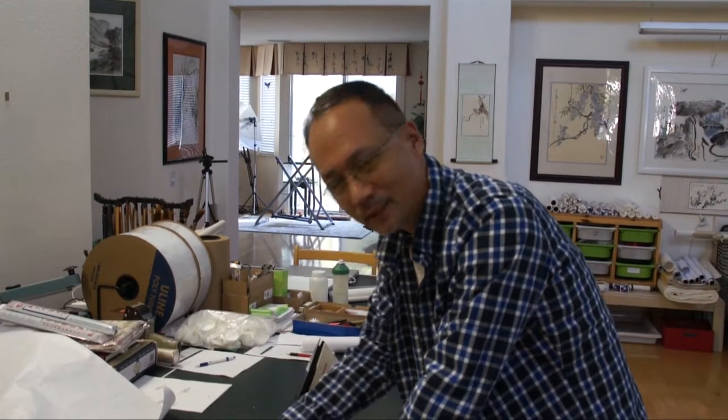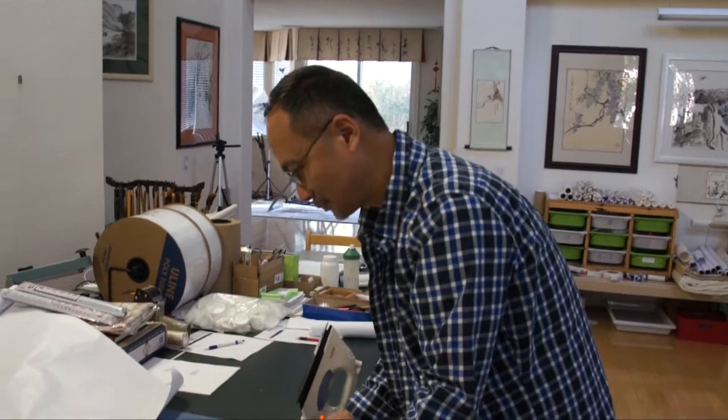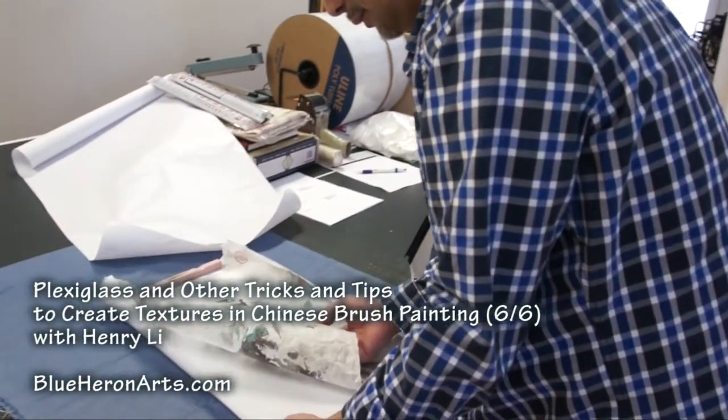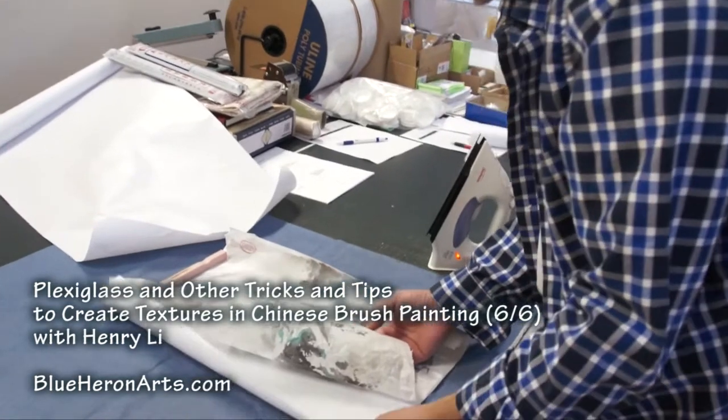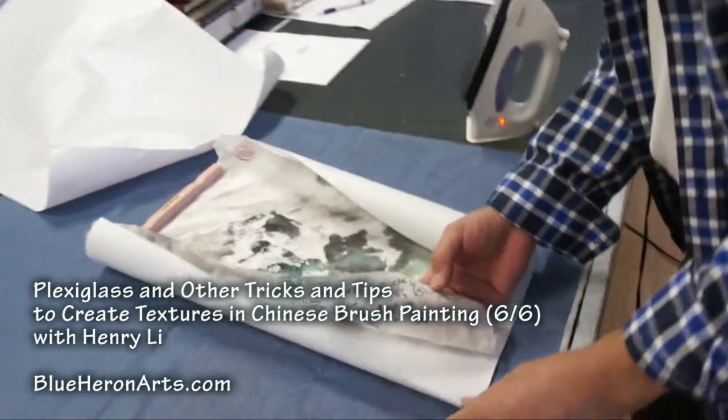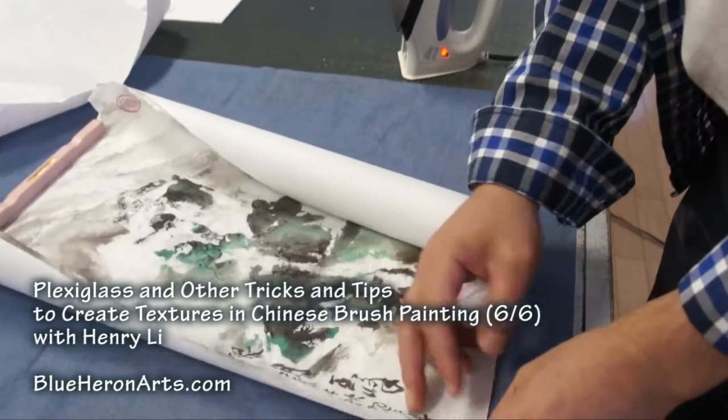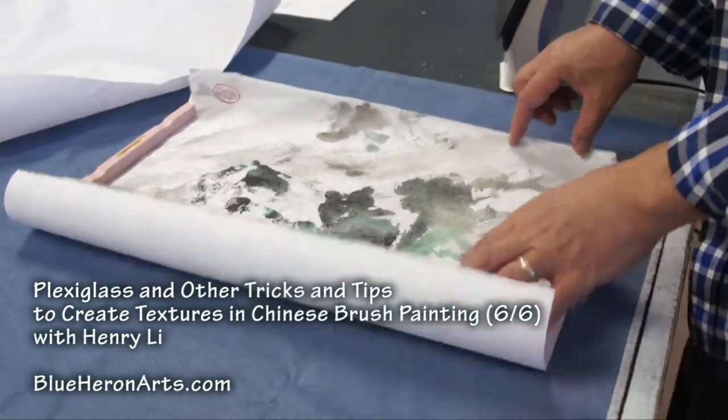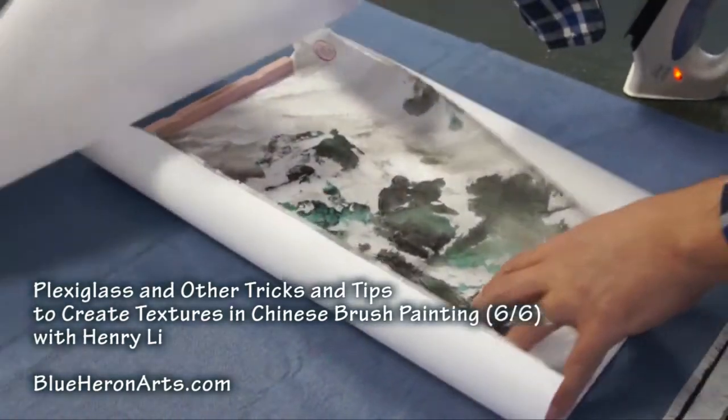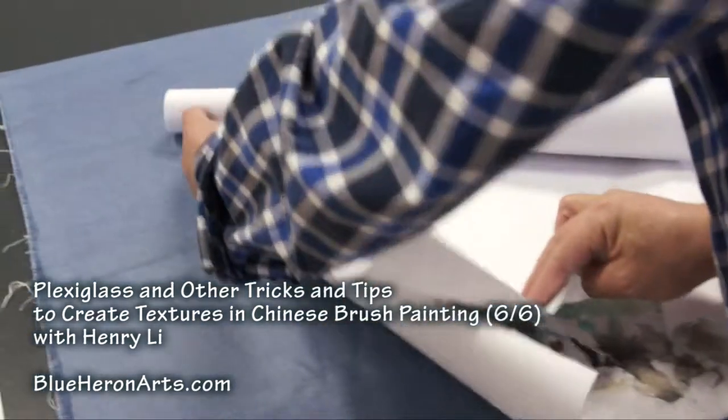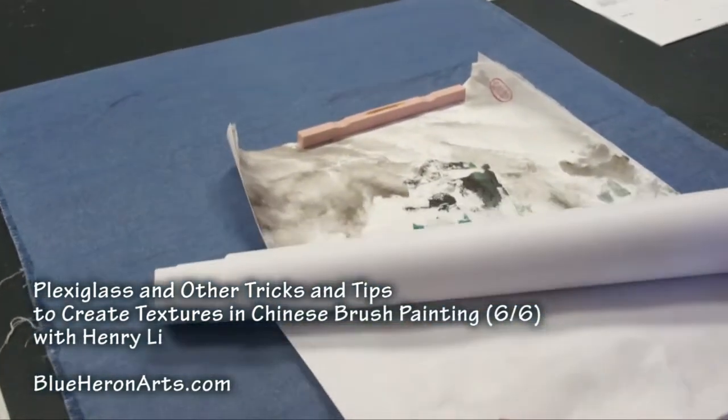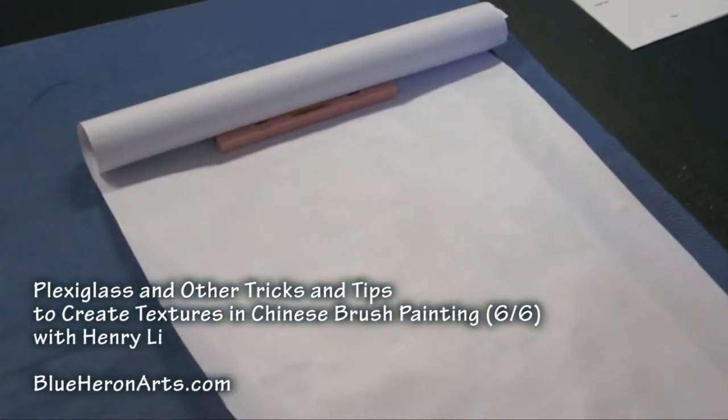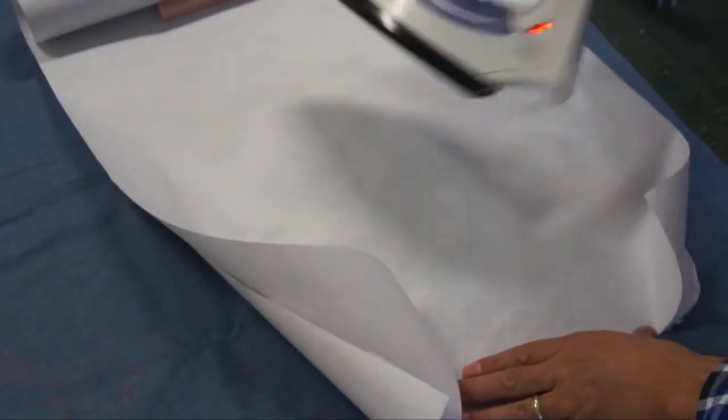Now we're going to mount this picture on silicone release paper. This is the silicone paper as a film side and release paper. So we put the painting on top of the release paper and put another sheet of the protecting paper and just iron it.